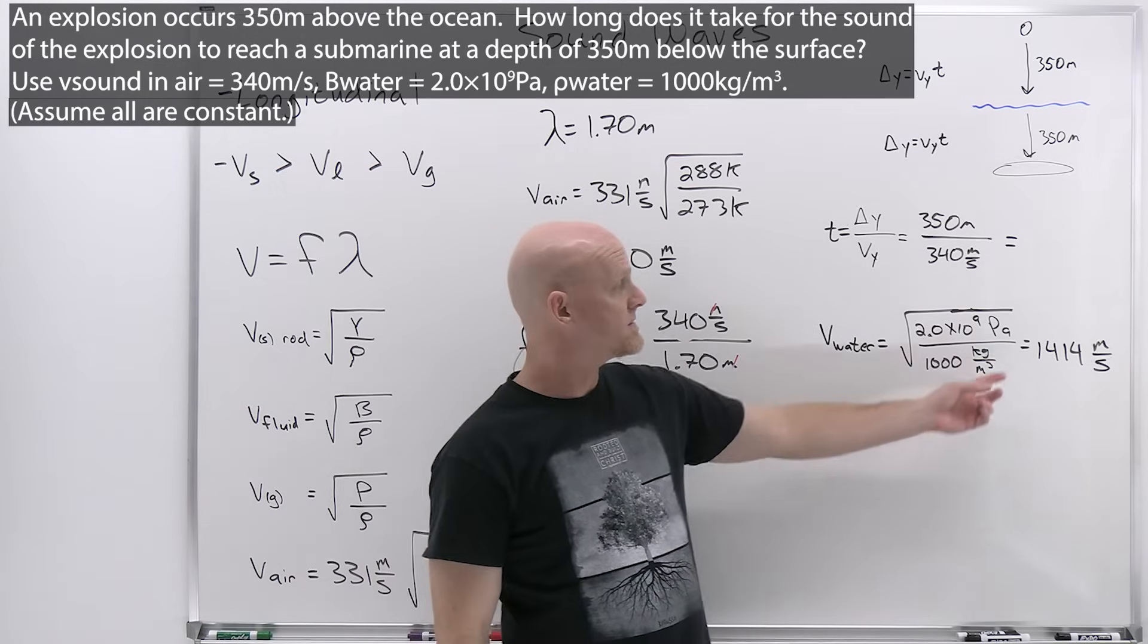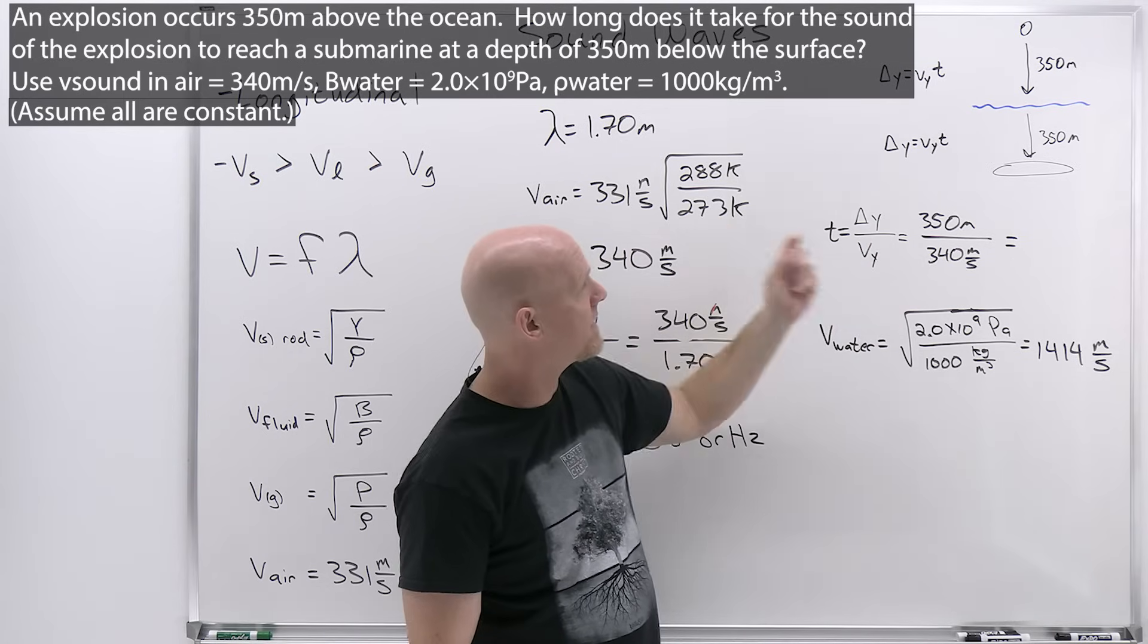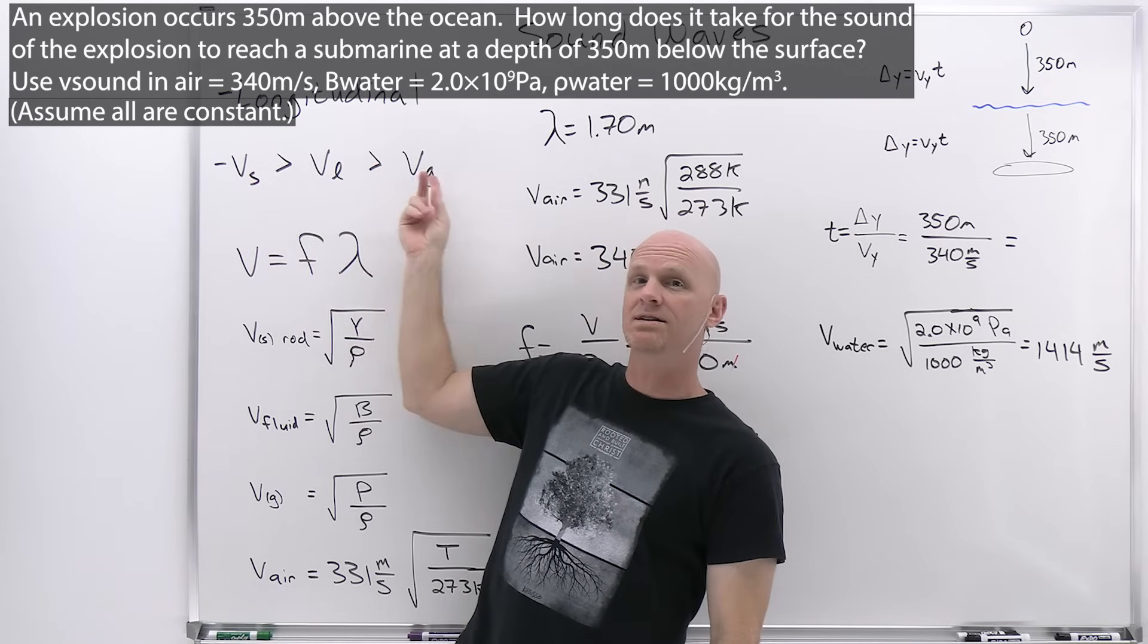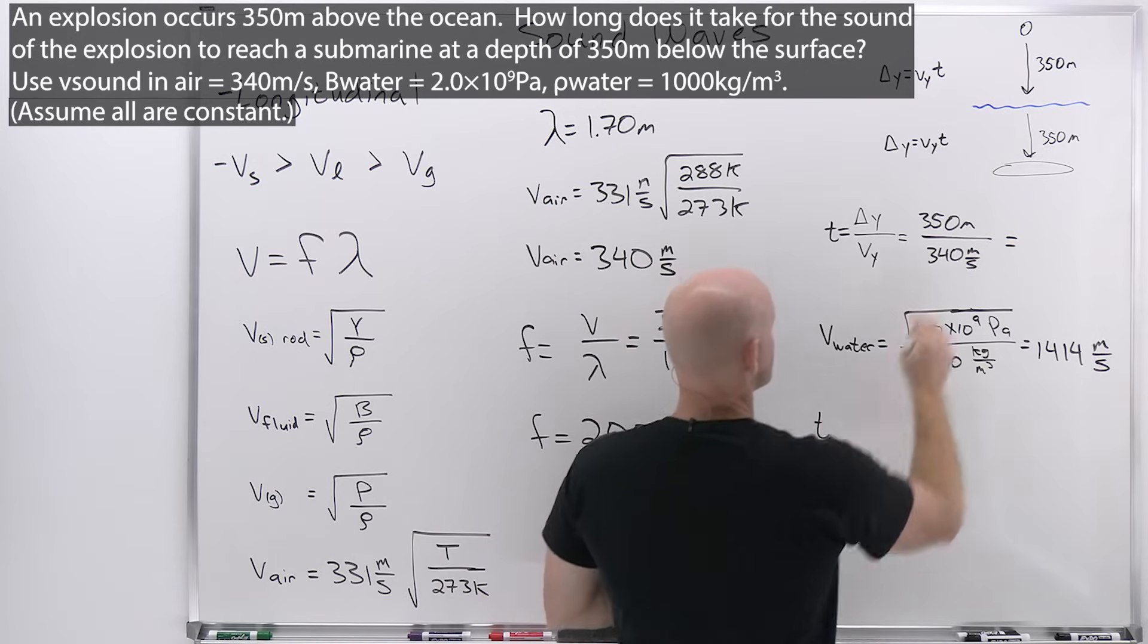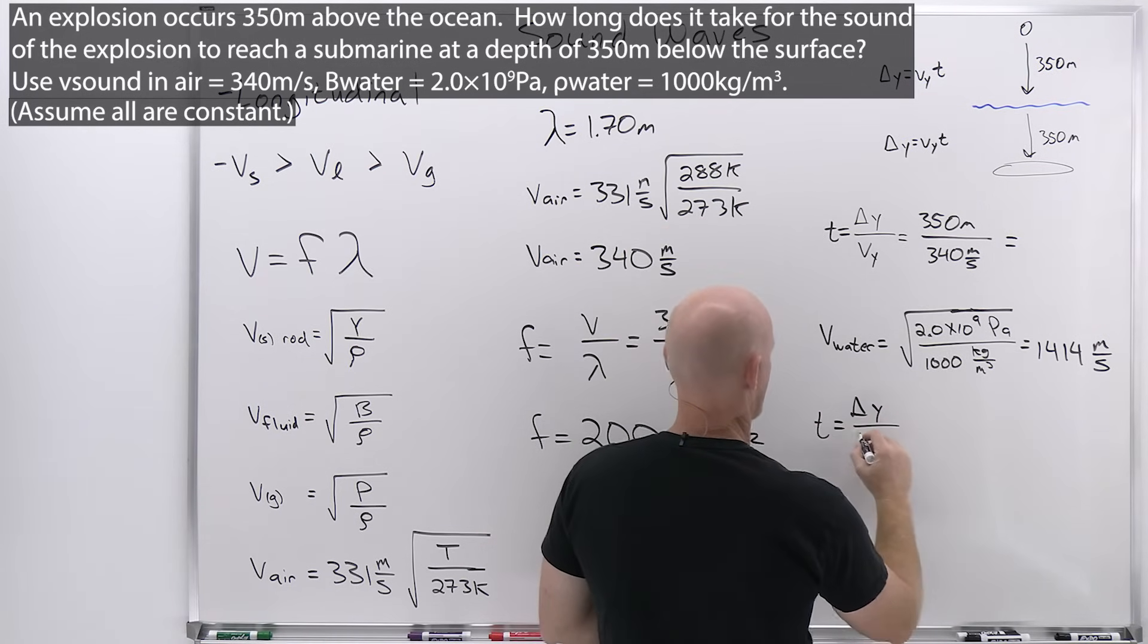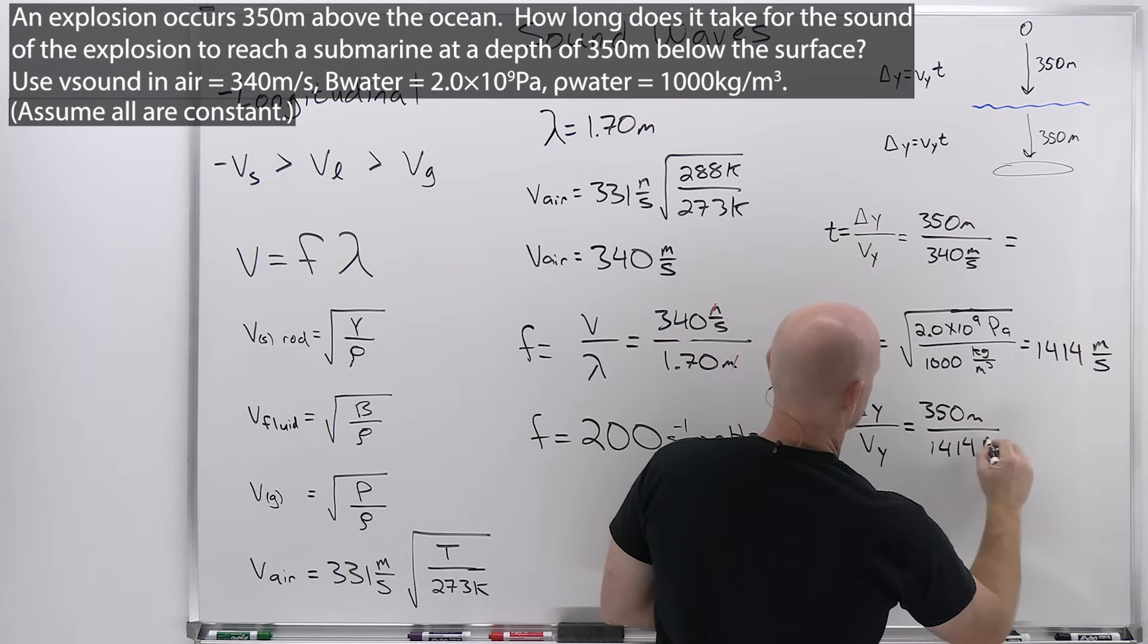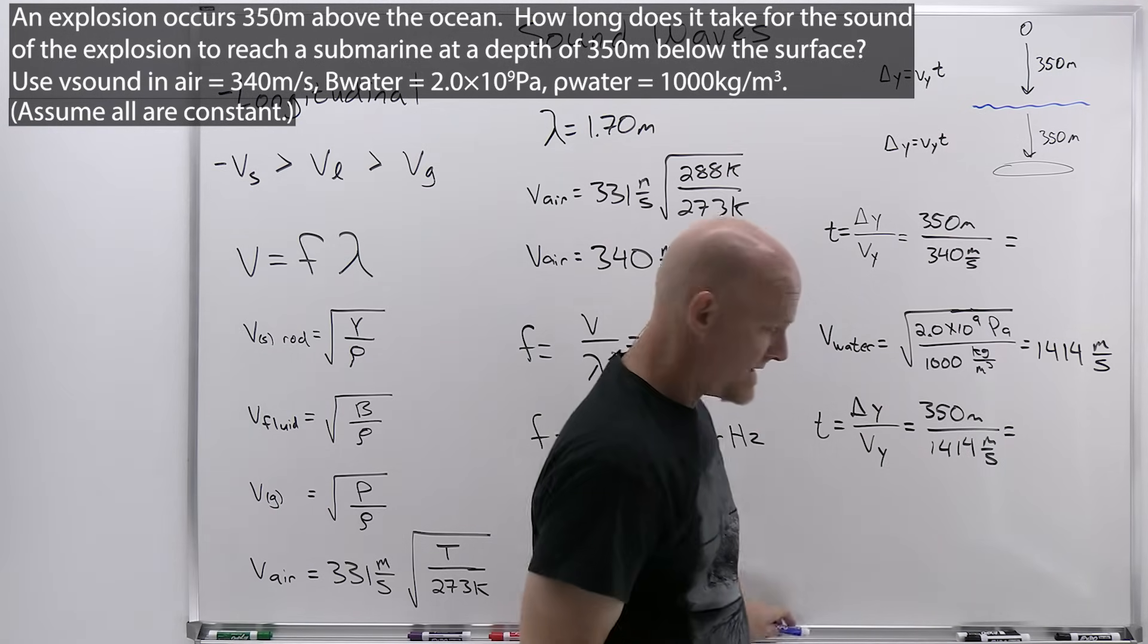So, first of all, we can see that, wow, the speed of sound is quite a bit faster in water, a liquid, than it is in air, a gas, at 340 meters per second. One of the things we said at the beginning of this lesson is that the speed of sound tends to be faster in solids than liquids and faster in liquids than gases. And that's definitely holding true right here. And then we can solve for the time for that second half of the journey, that second 350 meters. And that's going to, again, equal the displacement over the velocity, which again is still 350 meters in the water, and now with that velocity of 1,414 meters per second, and then we'll just take and calculate these two times and add them together.